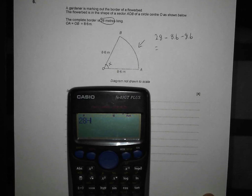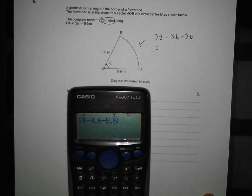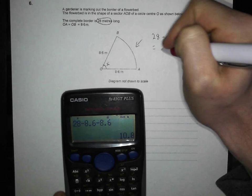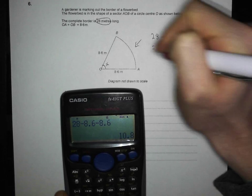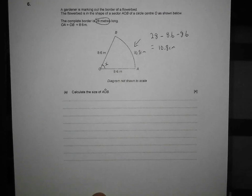28. Take off 8.6, take off 8.6. And that's going to give me, press my little SD button, 10.8 centimetres. OK. So I know I've got 10.8 centimetres now. Now, how's that going to help me?